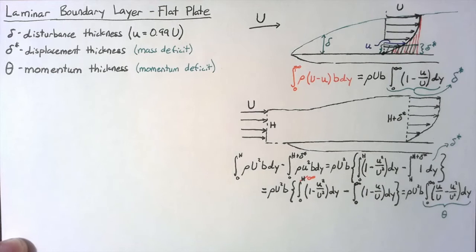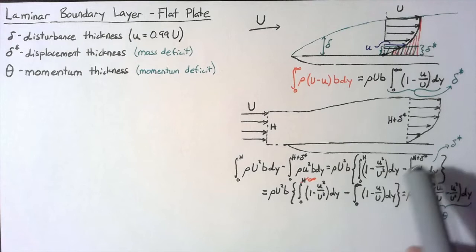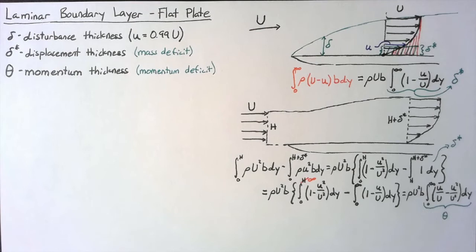So this momentum thickness is intrinsically linked to the shear stress, to the amount of friction that's dissipating this momentum. So if we can figure out what exactly this momentum thickness is, then there's probably a way for us to get to the shear stress, which can tell us things about drag and how much force it actually requires to push this air over our flat plate.